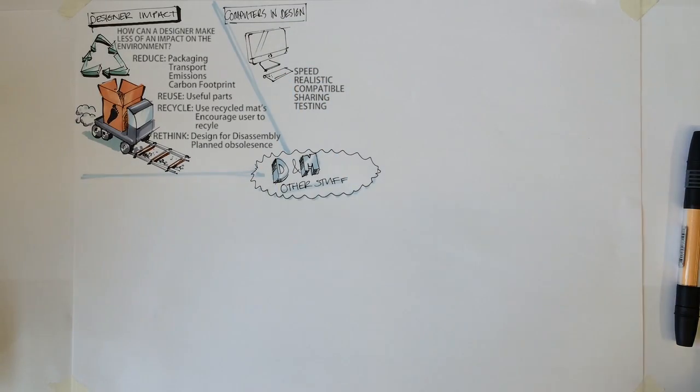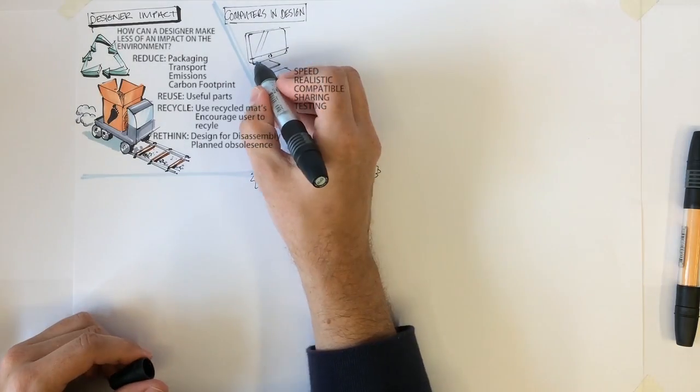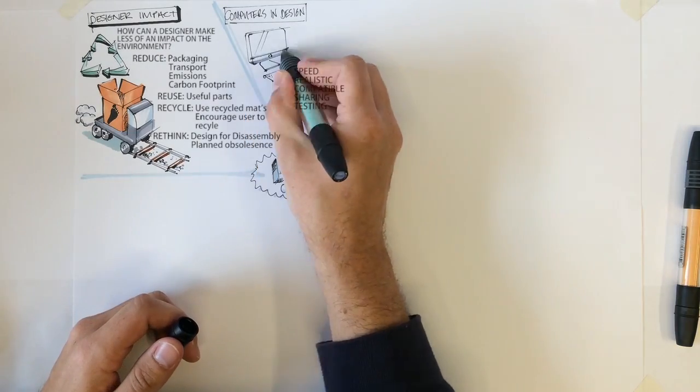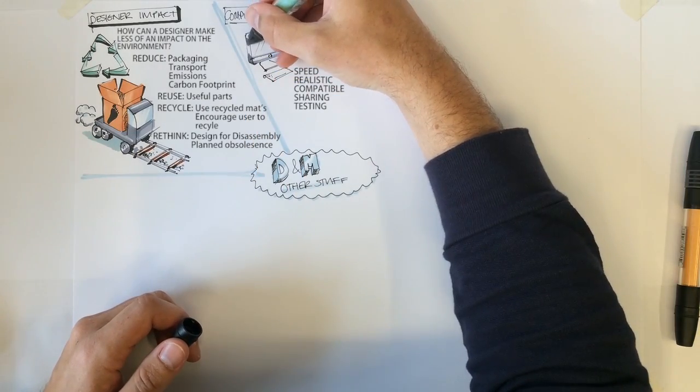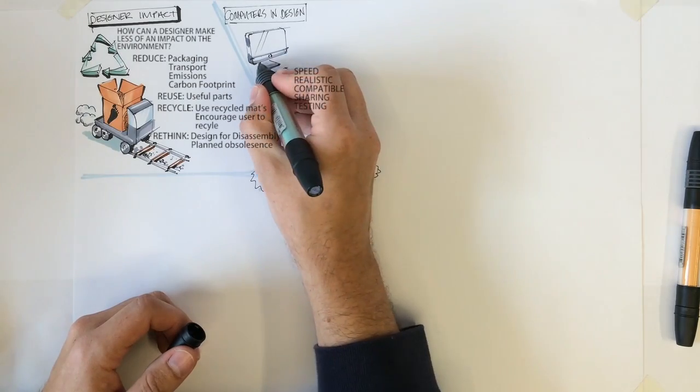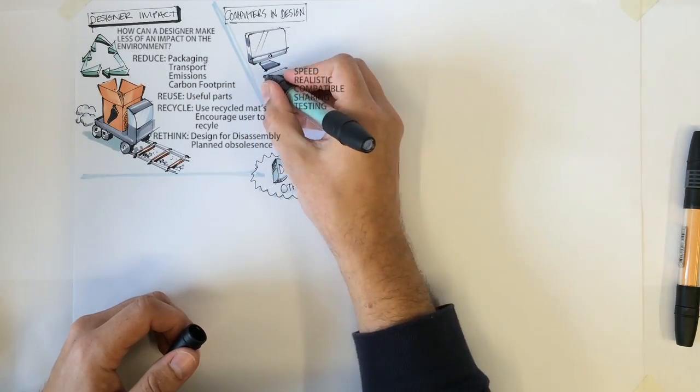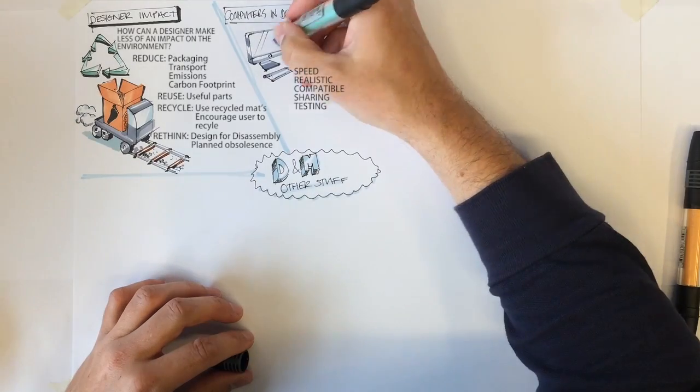Speed. Quick representations of design versus hand-drawn. Changes to design can also be made more easily. Realistic. Useful for use with clients to give them a better idea of the design. The client may not be able to read complicated drawings.